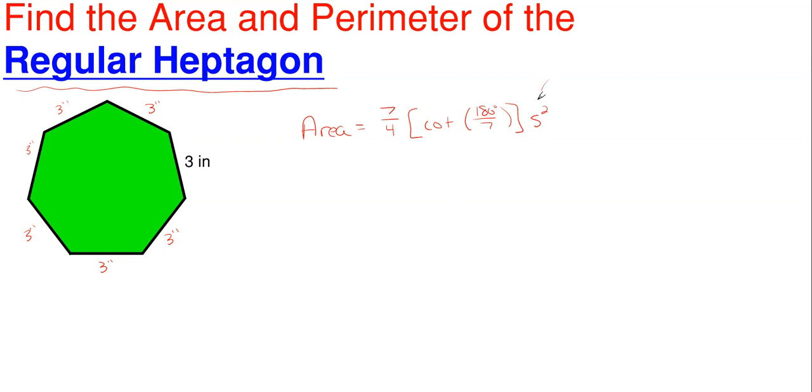So first off, s is just your length of one of your sides. So in this case, since they're all equal, we would just put three inches in there. Now the remaining portion right here, since it is a constant value, we can simplify this down to make this equation so much easier. So this area for a regular heptagon just becomes 3.634 times s times s.